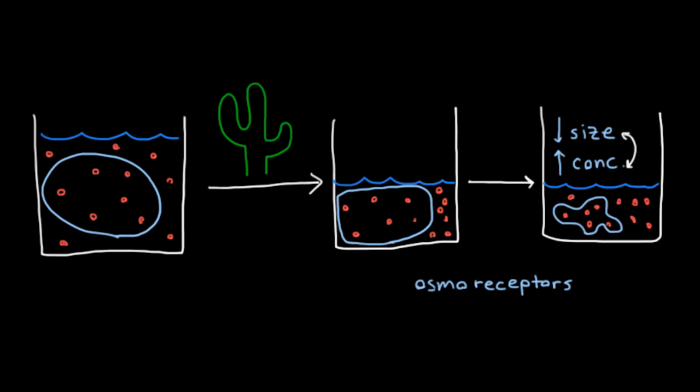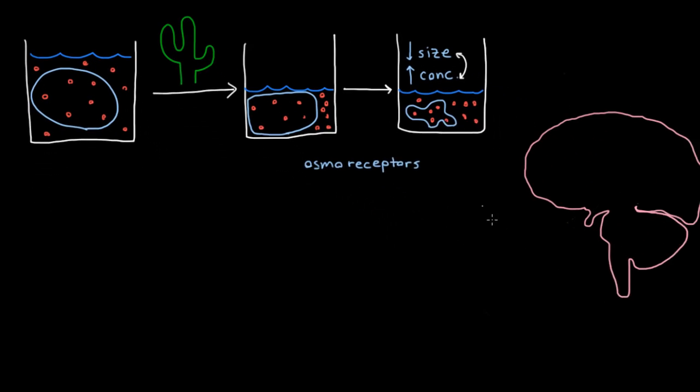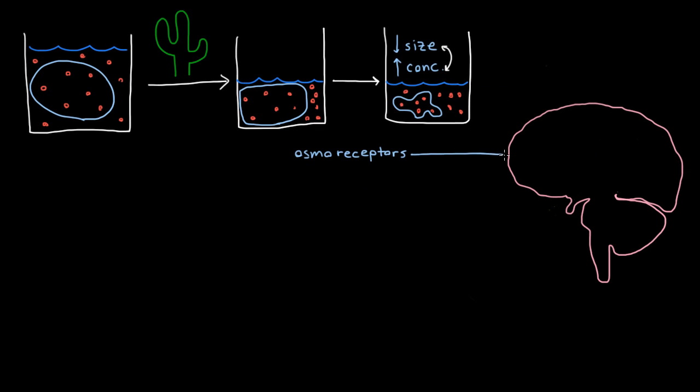Now these osmoreceptors are located in a special part of your body, and actually in the brain. So let's look at our brain. Here we have a brain, and the osmoreceptors are located in a part of the brain called the hypothalamus, which is around here in the midline. It's probably called the hypothalamus because it's like a small version of the thalamus.